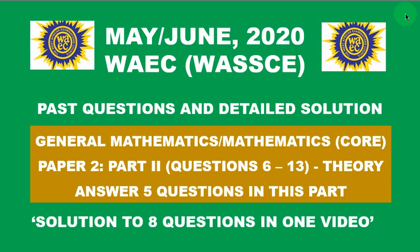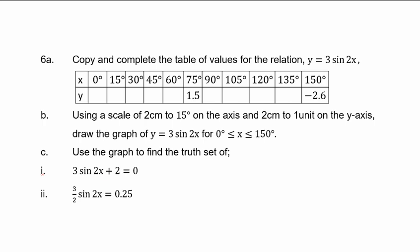This part contains questions 6 to 13, about 8 questions, and you are expected to answer 5 questions in this part. Solution to 8 questions in one video. Question 6A: copy and complete the table of values for the relation y = 3sin2x. You have the table of values with some values missing for y and you are expected to solve for them.